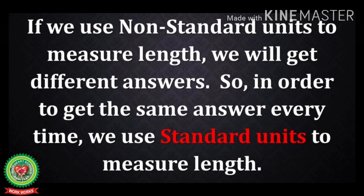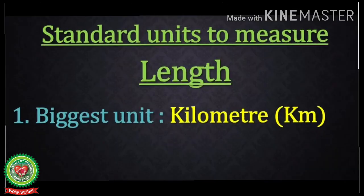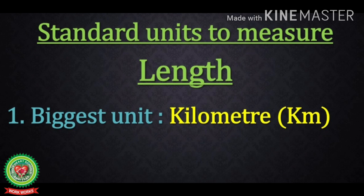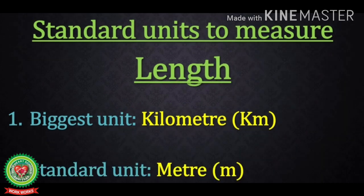Standard units were made so that we can get accurate answers when we measure different things. The biggest unit of length is kilometer. It is the biggest because it is used to measure things or objects which are very long, for example the distance between two cities, roads, and railway tracks — things which have no visible end. The standard unit is meter, used for things that cannot be measured with a hand span or cubit, and are not as lengthy as a road — like a piece of cloth.